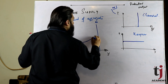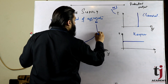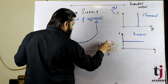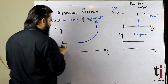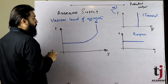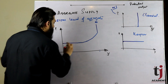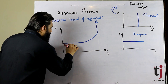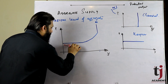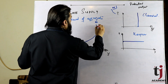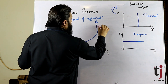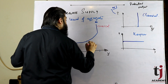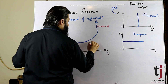एक वक्त आएगा जब आप potential level पर पहुंचेंगे। तो aggregate supply curve में हमने तीनों ranges देखीं: Keynesian range, intermediate range, और classical range।